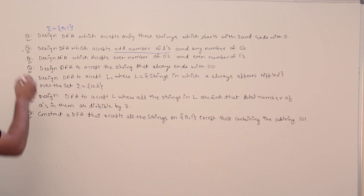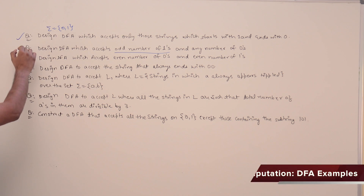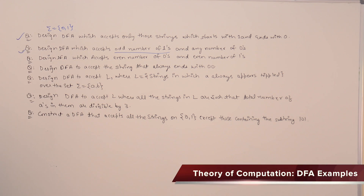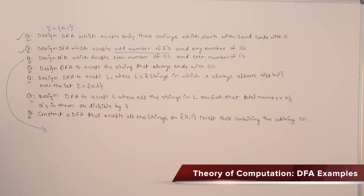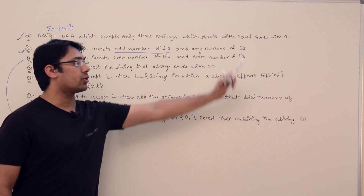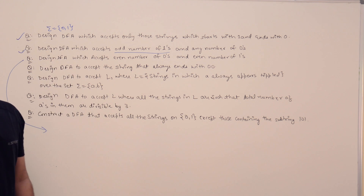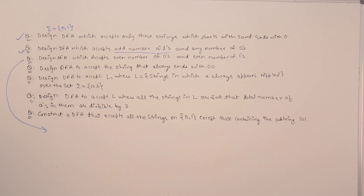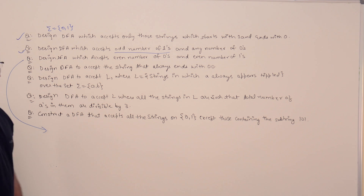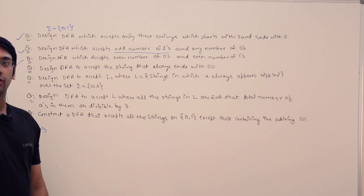We have already done question numbers 1 and 2. Now we have designed a DFA which accepts an even number of zeros and an even number of ones. This is slightly tricky compared to the first two questions. The number of ones should be even and the number of zeros should be even.